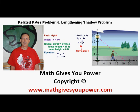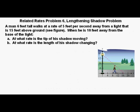Related Rates Problem 6, Lengthening Shadow Problem. A man 6 feet tall walks at a rate of 5 feet per second away from a light that is 15 feet above ground.